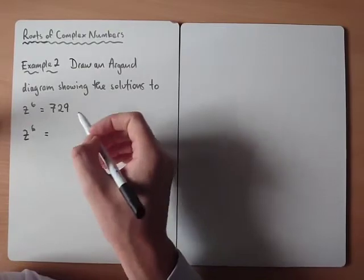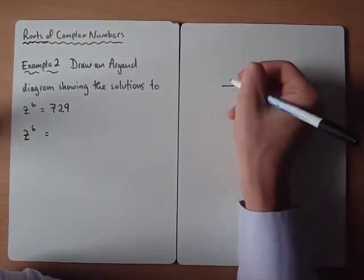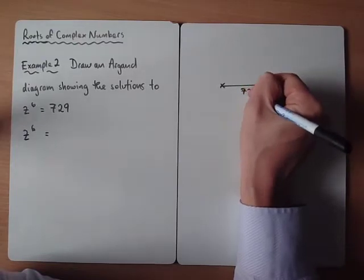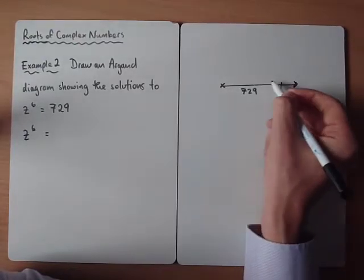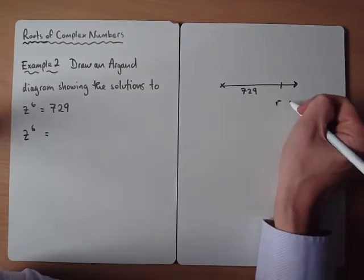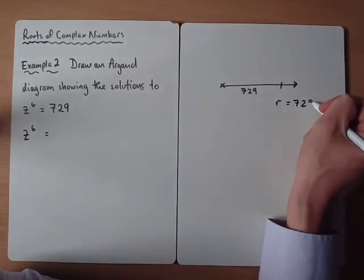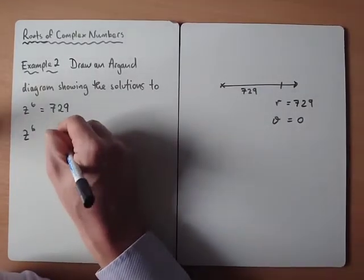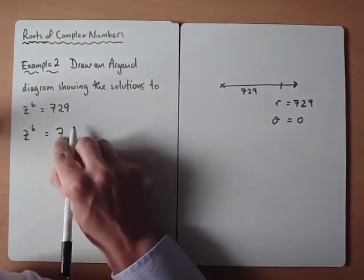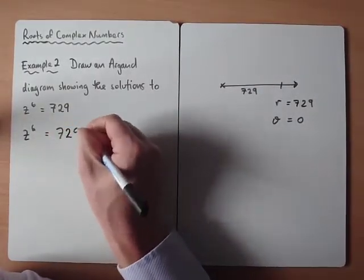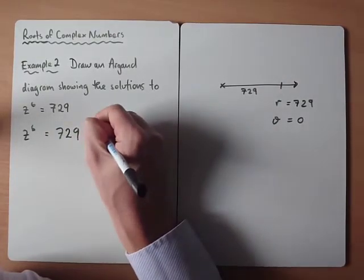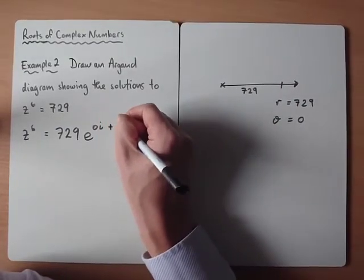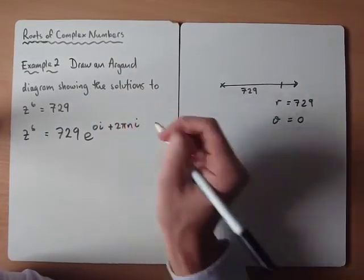If we write it in exponential form, again, for example 2, we are literally along the real number line, 729. So r would equal 729, and theta would equal 0. But any multiple of 2π as well, so plus 2πni.